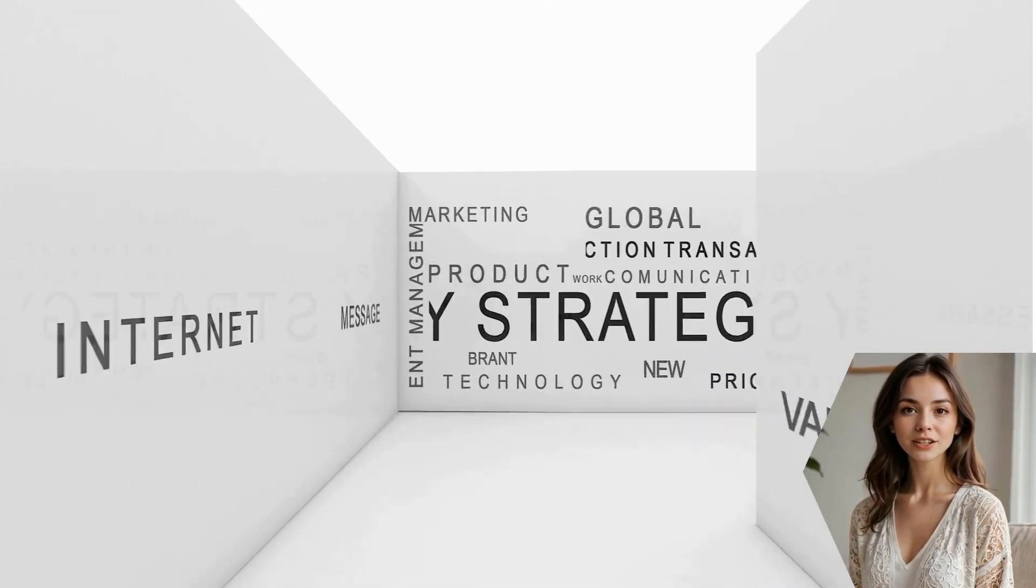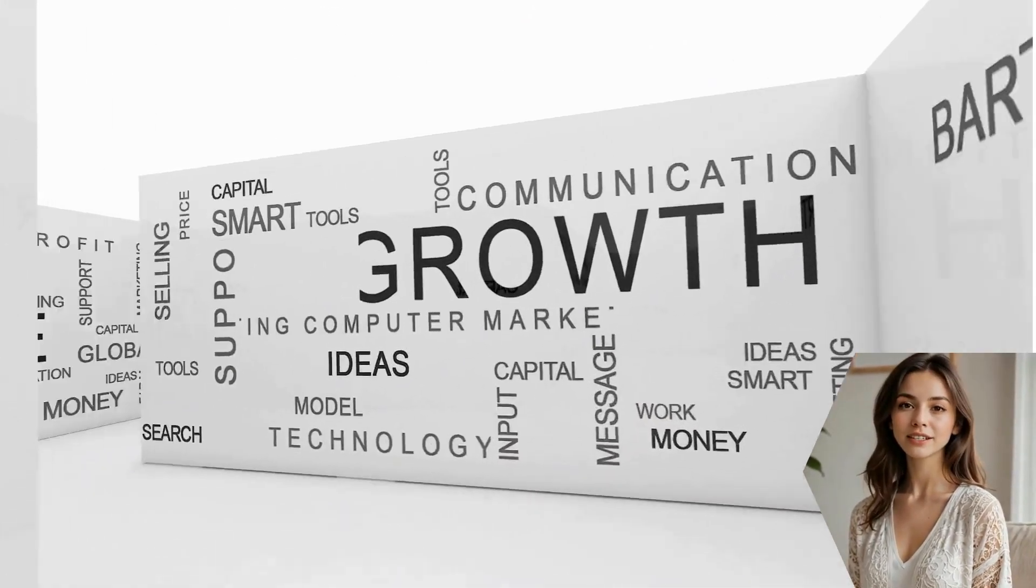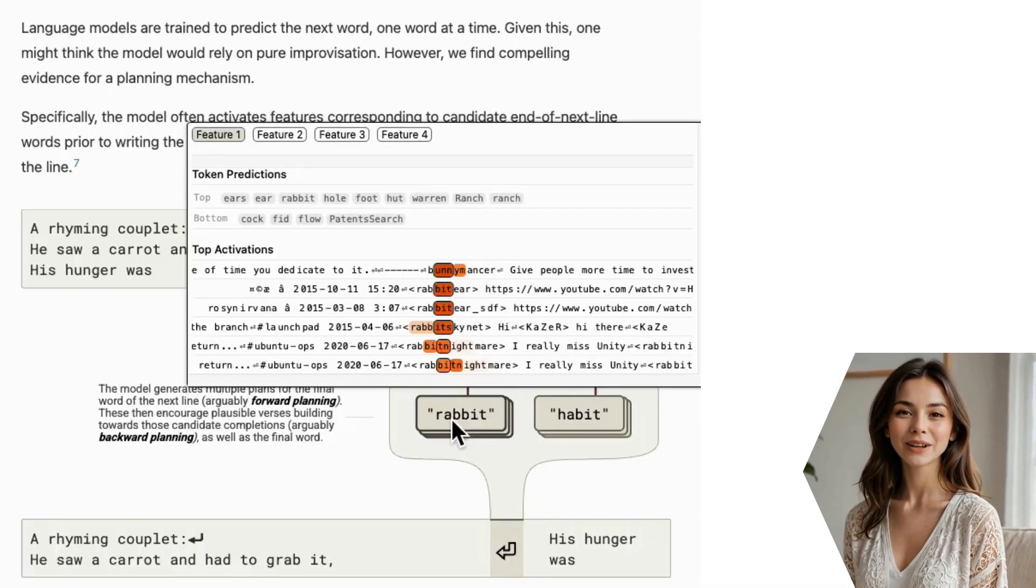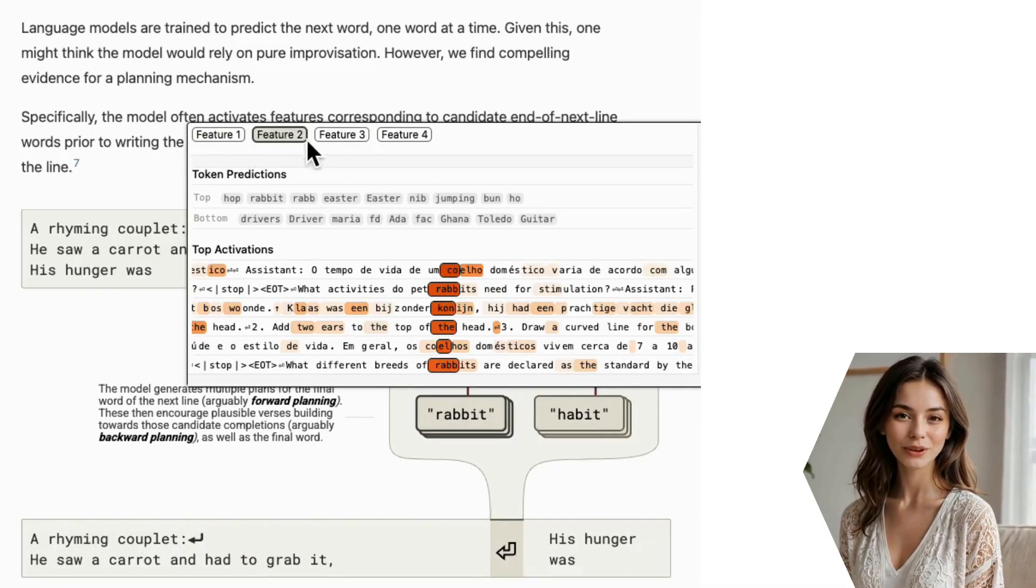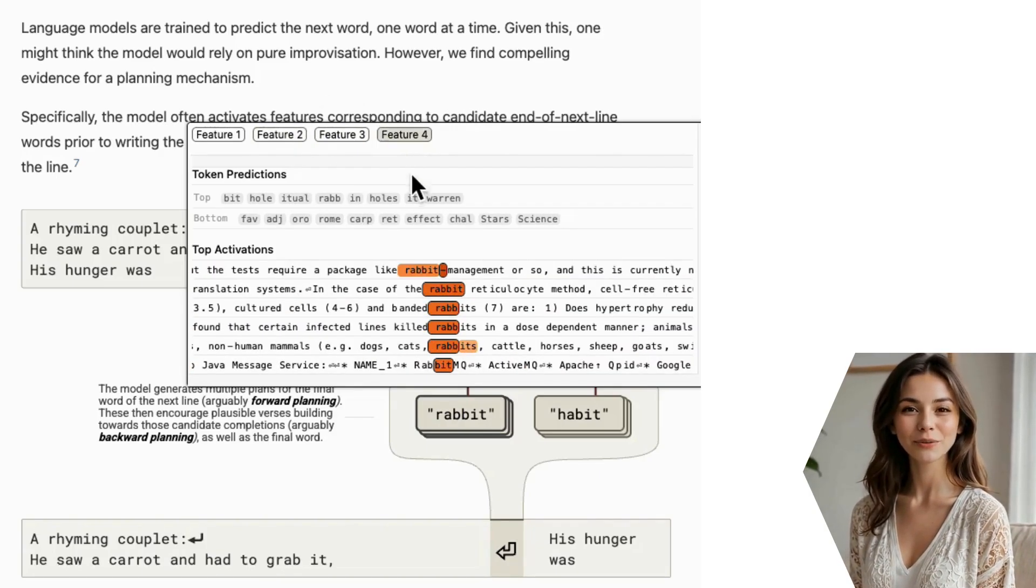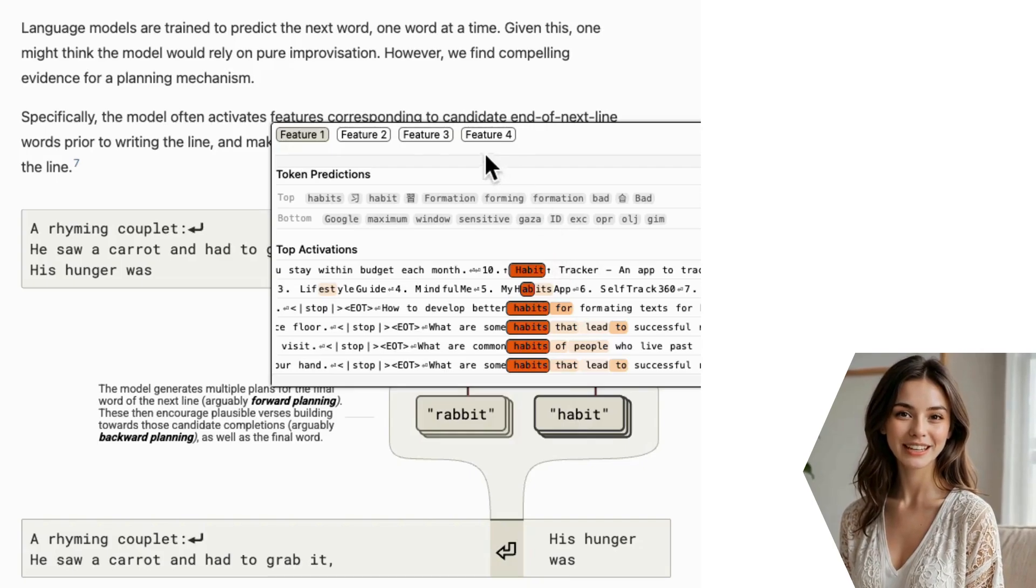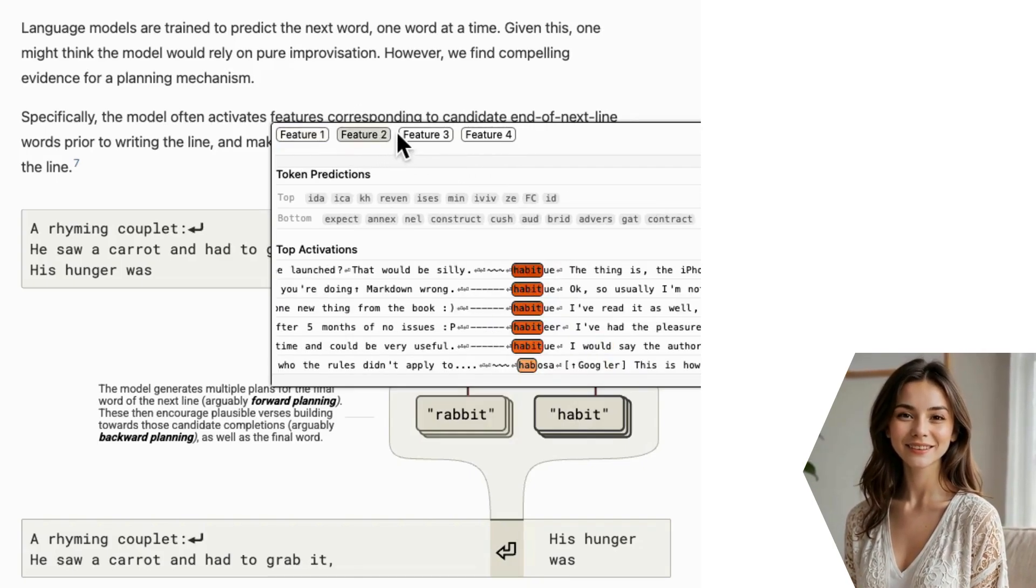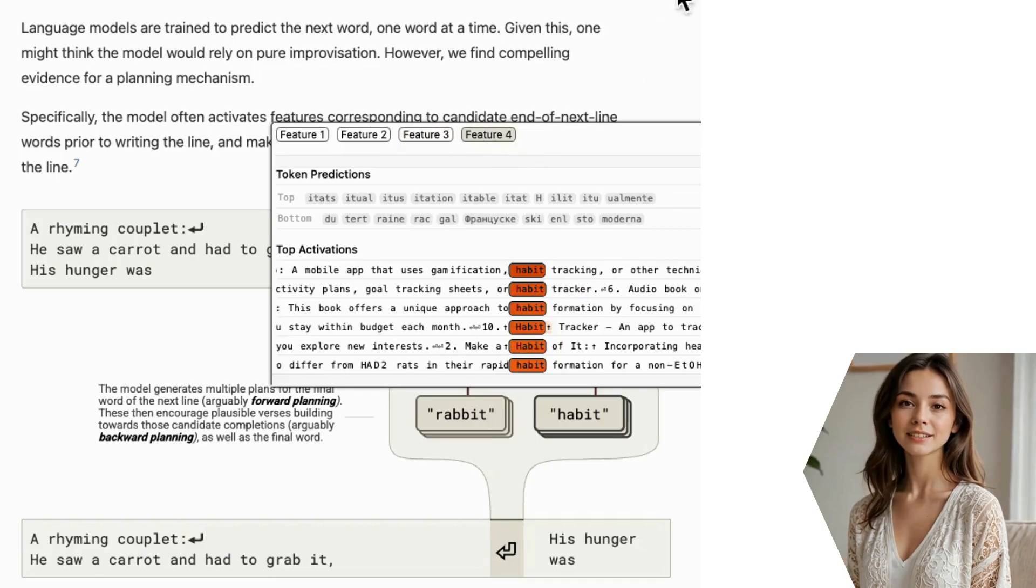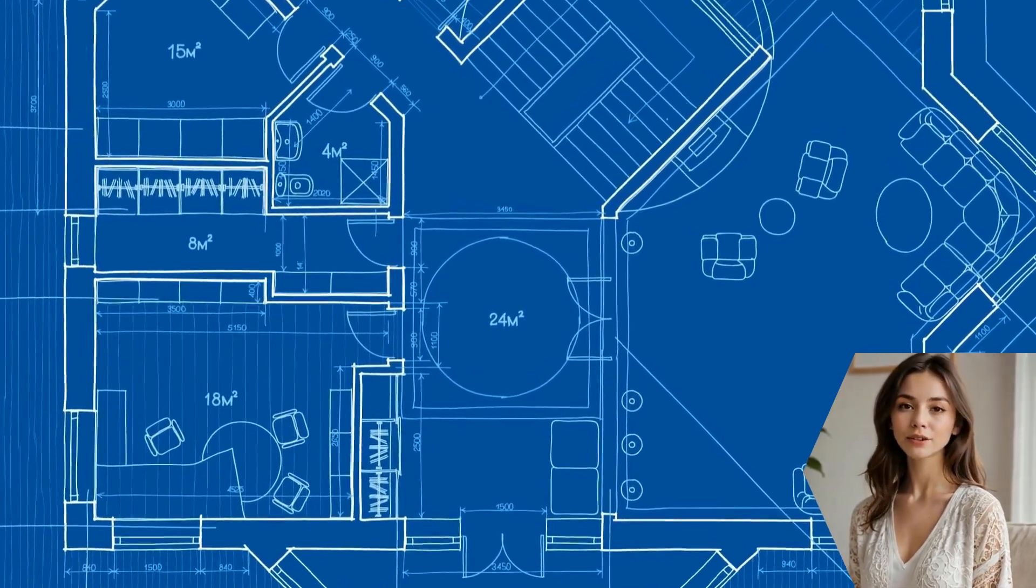This tool has uncovered some truly fascinating behaviors. For instance, the researchers found that LLMs can plan ahead. When asked to write a poem that rhymes with the word it, the model activates features for potential rhyming words like rabbit and habit before it even starts writing the line. It then works backward from that planned word to construct a sentence that makes sense. That's incredible foresight.